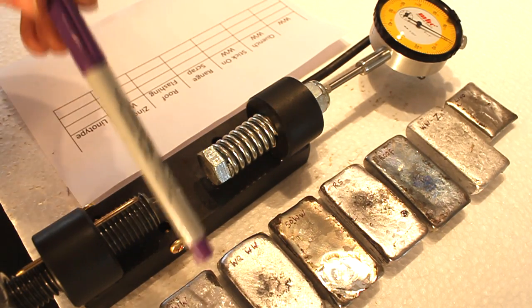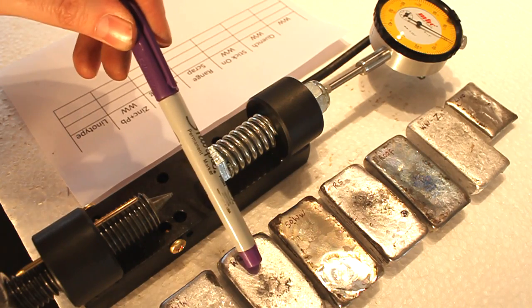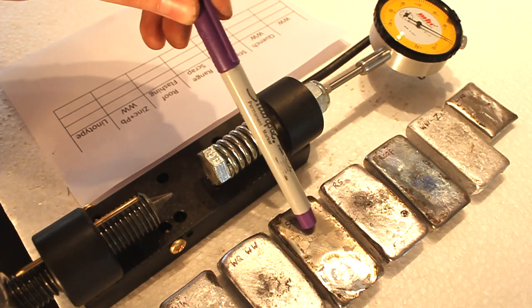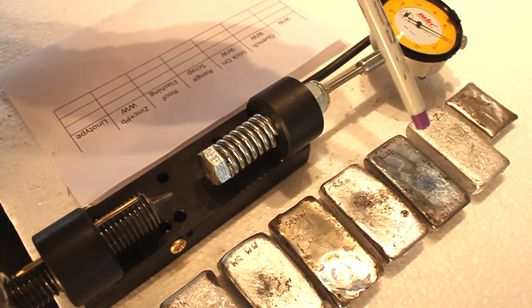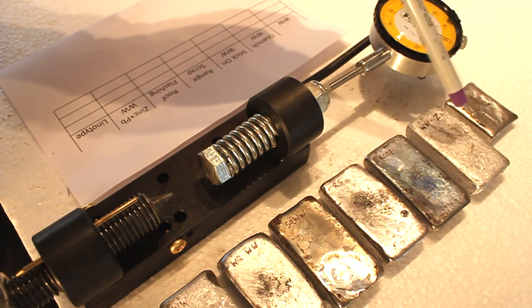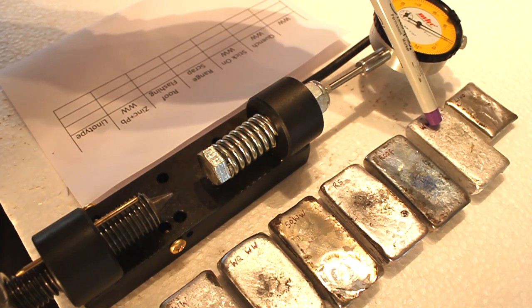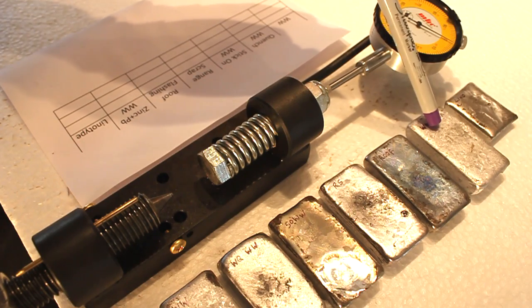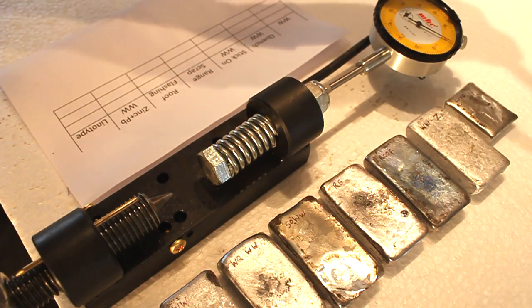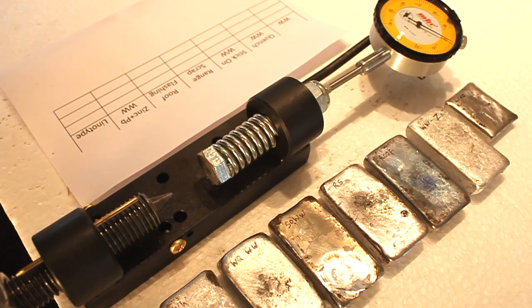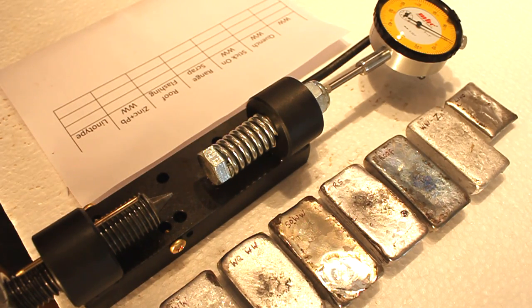Here I've made up some samples. This is wheel weight, water quenched wheel weight, stick-on wheel weight, rain scrap, roof flashing. This is wheel weight that I purposely contaminated with a small amount of zinc. This is linotype. That one is smaller because that's the only amount I had, so I had to make it a little smaller to maintain some thickness on it.